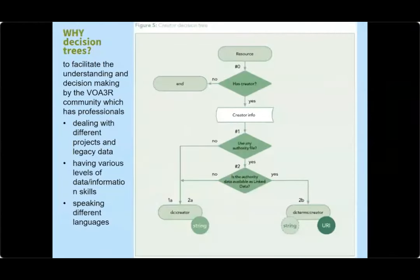LOD-BVD 3.0, published in December 2020, includes properties from multiple namespaces. The roadmap of LOD-BVD 3.0 presents a conceptual model and a set of decision trees. The core component contains decision trees for common properties used in describing bibliographic research instances, to facilitate understanding and decision-making by data providers and service providers who have been dealing with different projects and legacy data, most likely having various levels of data and information skills.